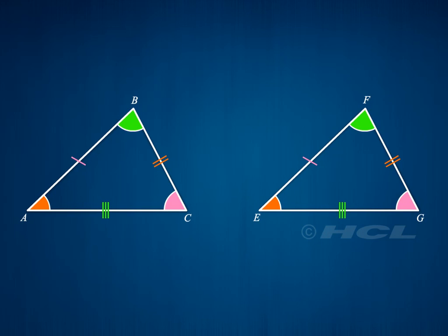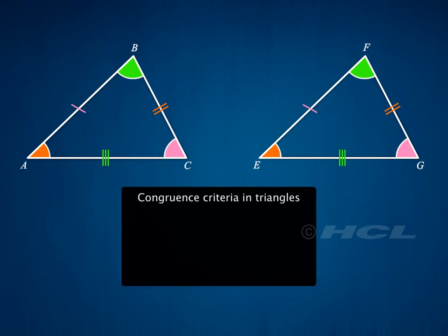Instead of verifying all six parts, we have certain criteria to verify the congruence of triangles. You are already aware of congruence criterions in triangles. They are SAS, ASA, SSS, RHS.